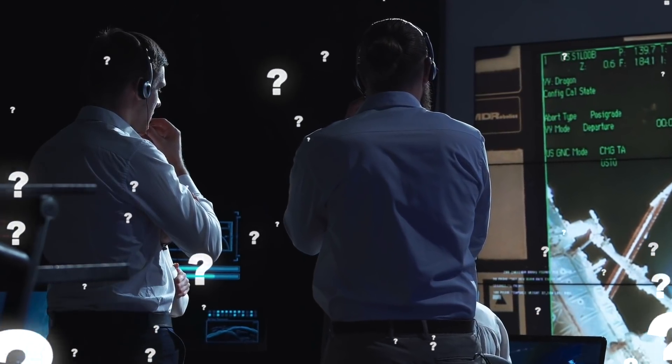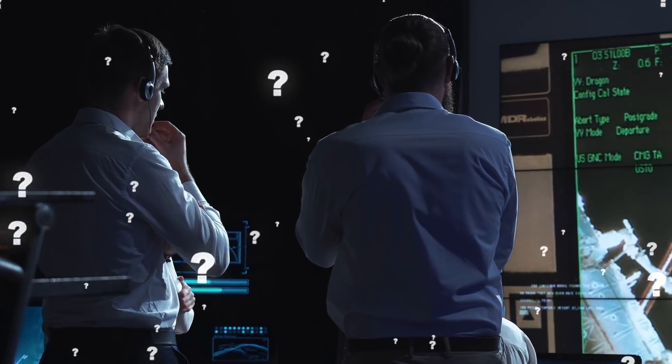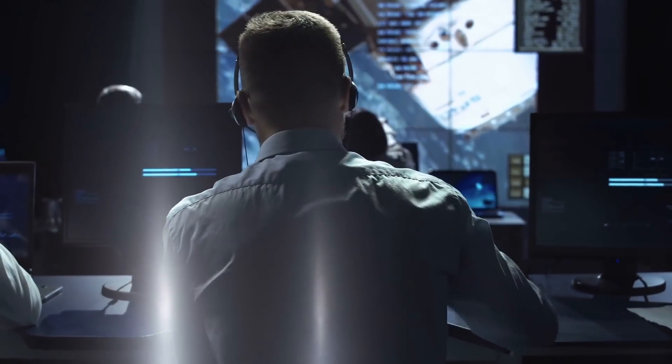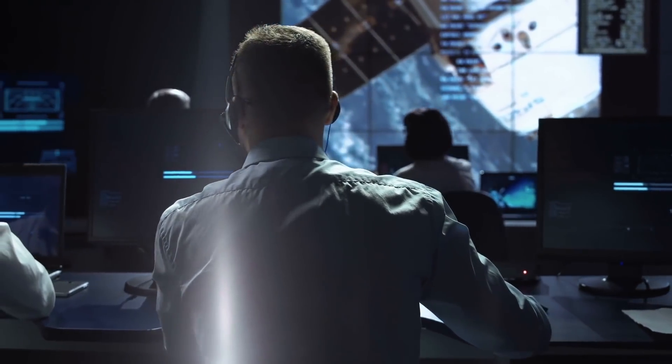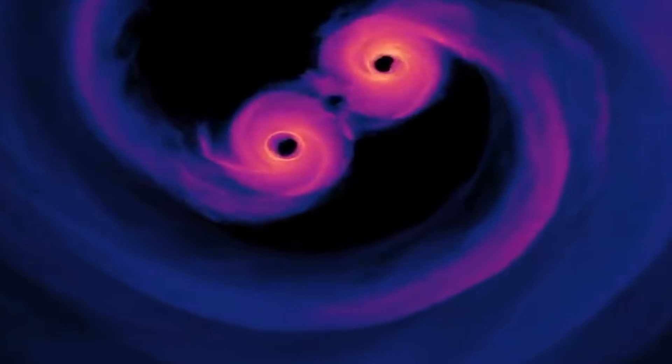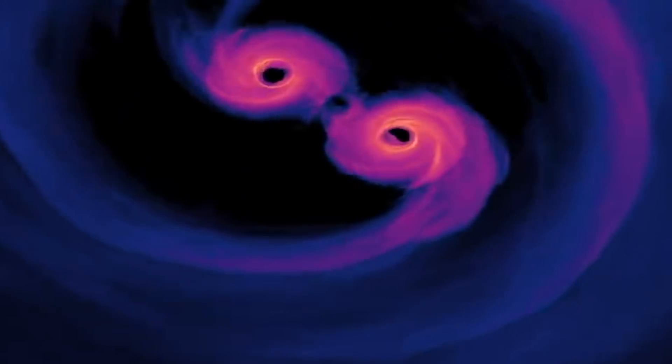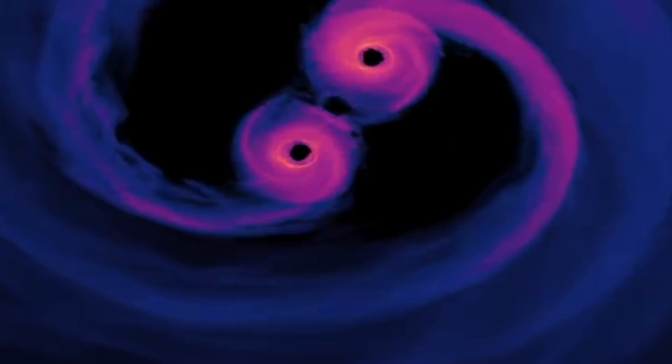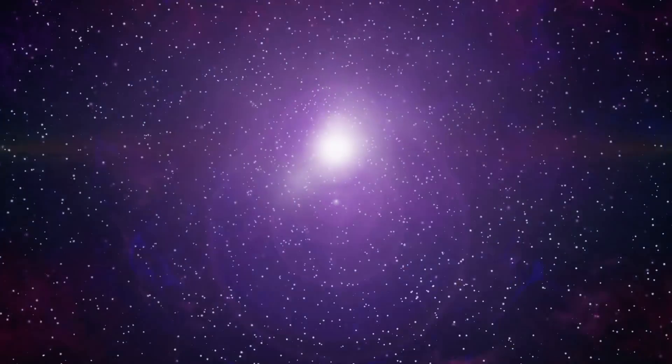But how is it that white holes play a central role in some scientific theories, even though the existence of these astronomical formations has not been proven at all? The reason for this is that some experts believe that white and black holes, in a meticulously coordinated interplay, could be responsible for another amazing space phenomenon. But more about this later. Other theories suggest that white holes could also have played a significant role in the birth of our universe, the Big Bang.